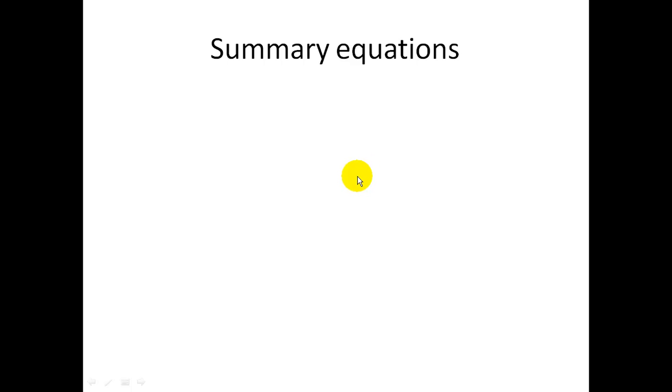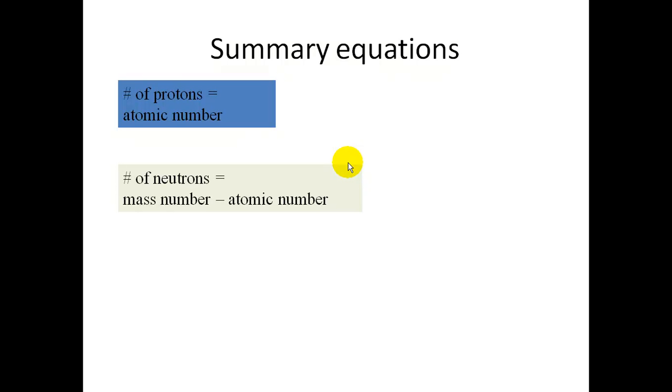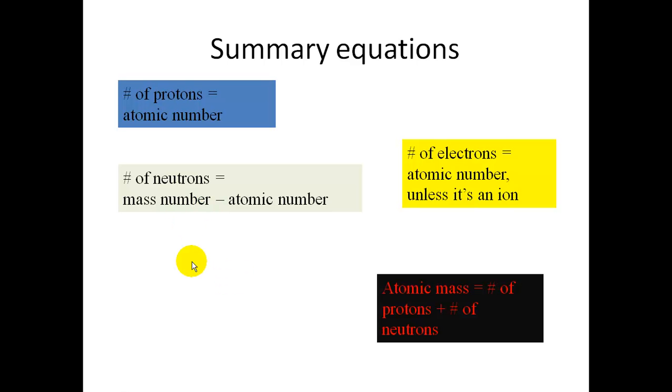So we have four summary equations that you should know. First one, number of protons equals the atomic number. Number of neutrons equals mass number minus atomic number. And number of electrons equals atomic number, unless it's an ion. So, you definitely need to know how to calculate number of protons, neutrons, or electrons. The other equation is that the atomic mass is the number of protons plus the number of neutrons.